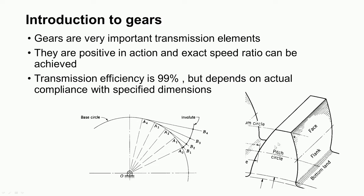Here we can see a tooth of a spur gear and some terms: the face and the flank of the tooth and the bottom land. We can observe a particular profile of the tooth. Different profiles are used — normally cycloidal profile and involute profile — and here you can see an involute profile. We will discuss these profiles in detail.